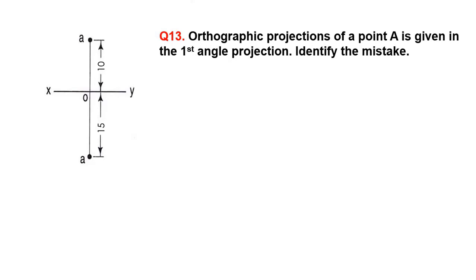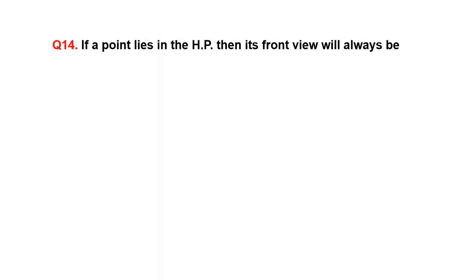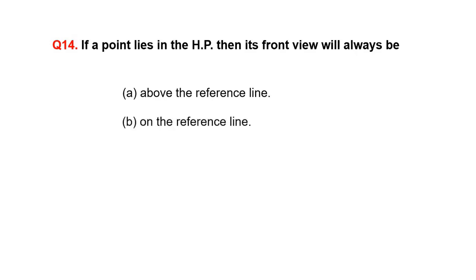Orthographic projections of point A is given in the first angle projection. If a point lies in the HP, then its front view will always be: A. Above the reference line, B. On the reference line, C. Below the reference line.